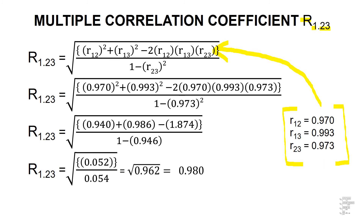We substitute the zero-order correlation coefficient between variable 1 and variable 2, which is 0.970, between variable 1 and variable 3, which is 0.993, and between variable 2 and variable 3, which is 0.973. We then multiply all zero-order correlation coefficients with 2 as a multiplier to achieve the full expression.